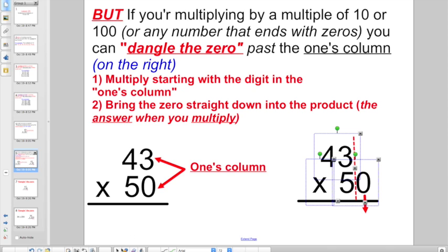So here is the old-fashioned way we line everything up on the ones column. But hey, 50 is a multiple of 10. It ends in a zero. So I can still set this problem up vertically, only when I write 50, dangle the zero past the digit in the ones column. And you're really not even going to worry about that zero until the very end.